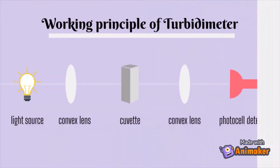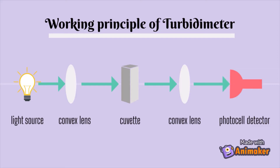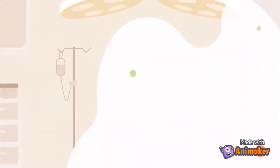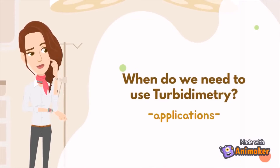A beam of light from the light source will pass through the convex lens. This incident light then travels parallel to the cuvette. The particles in the cuvette will scatter the light beam and then transmit the light to another convex lens. The light beam will be collected on the photocell detector, which will produce a current, and the result will then be displayed on the read-out meter.